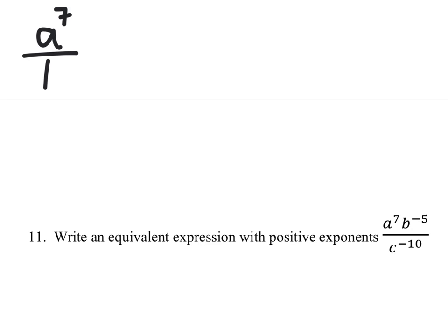So I've got a to the power of 7 over 1 times b to the power of negative 5 over 1 times 1 over c to the power of negative 10, because the c to the power of negative 10 is in the denominator.